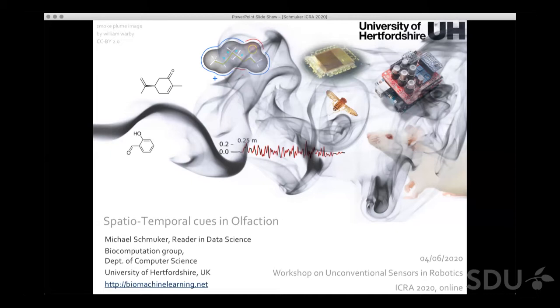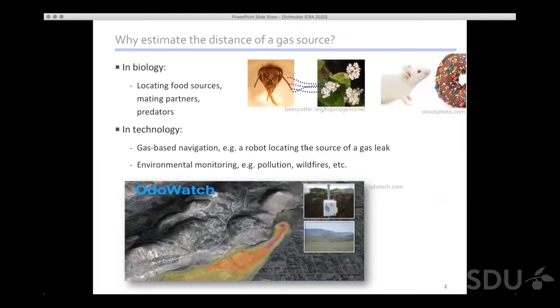When we talk about olfaction in robots, the question arises: where is a gas source? We want to navigate to a gas source. In biology, animals face this problem when they locate food sources, mating partners, or avoid predators. In technology, we're looking at gas-based navigation, for example a robot locating the source of a gas leak or environmental monitoring.